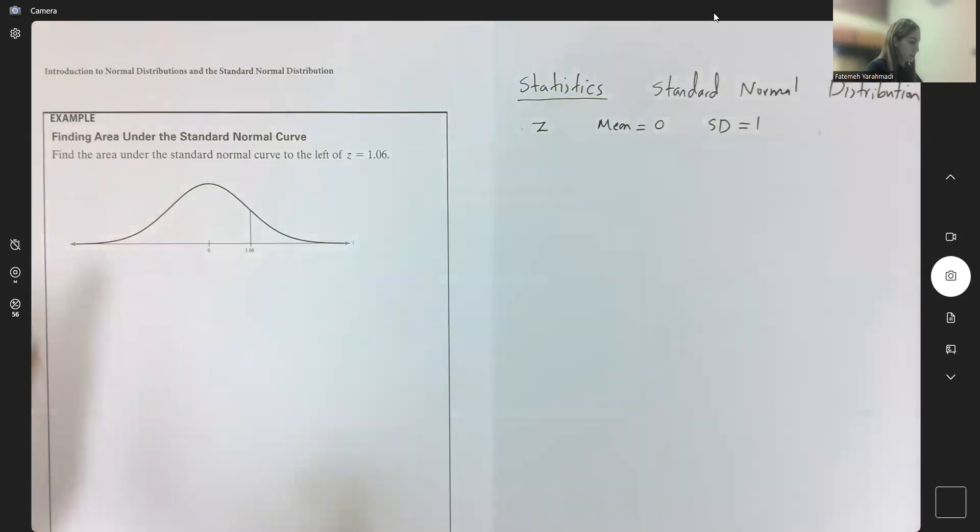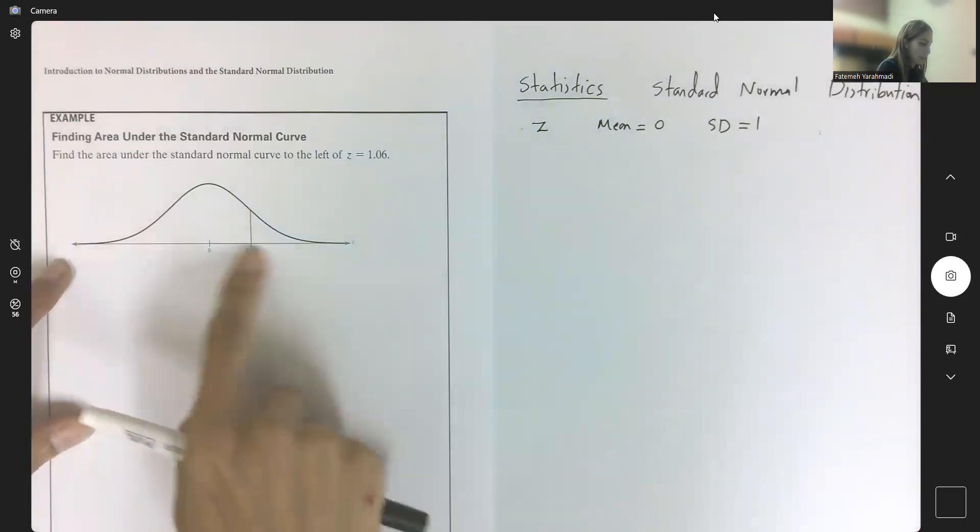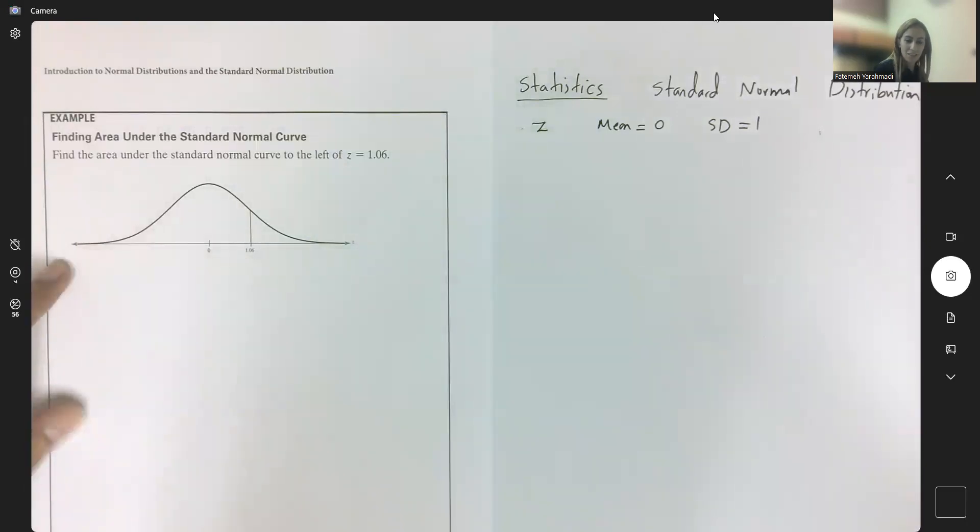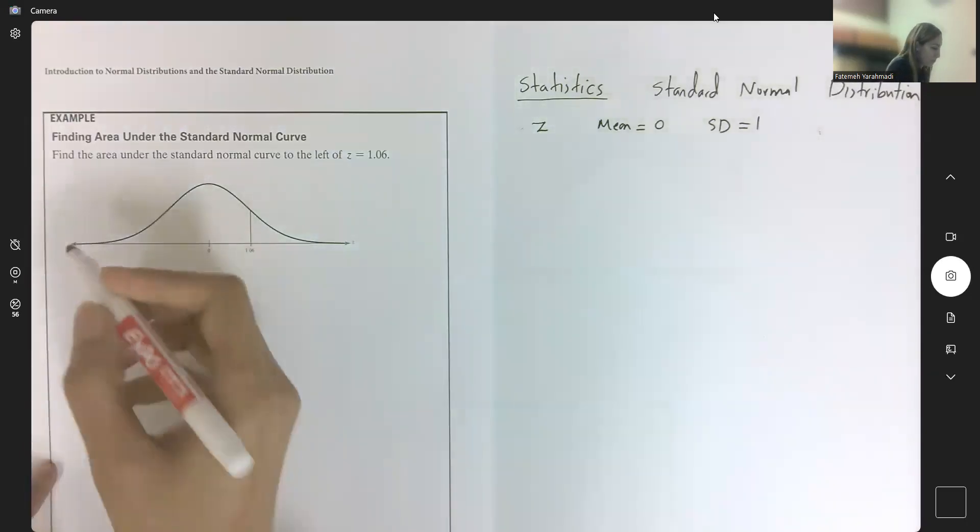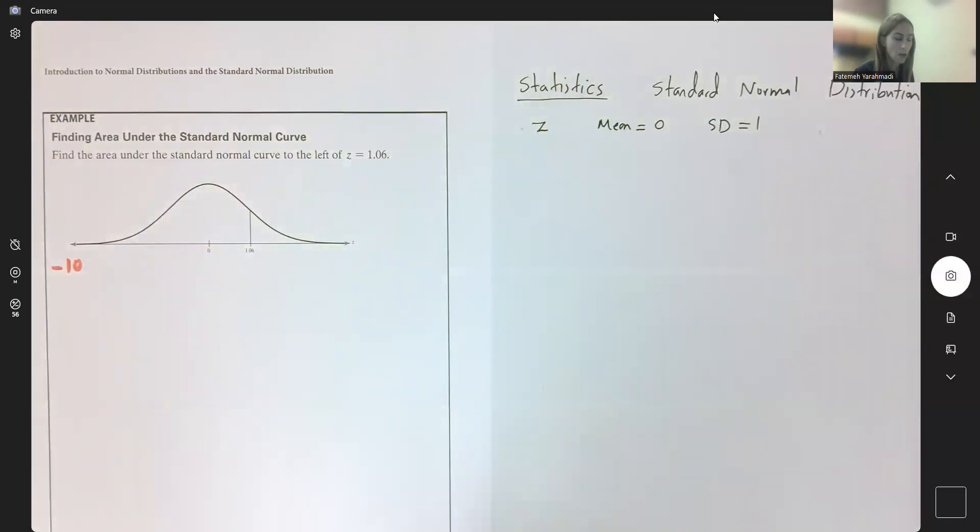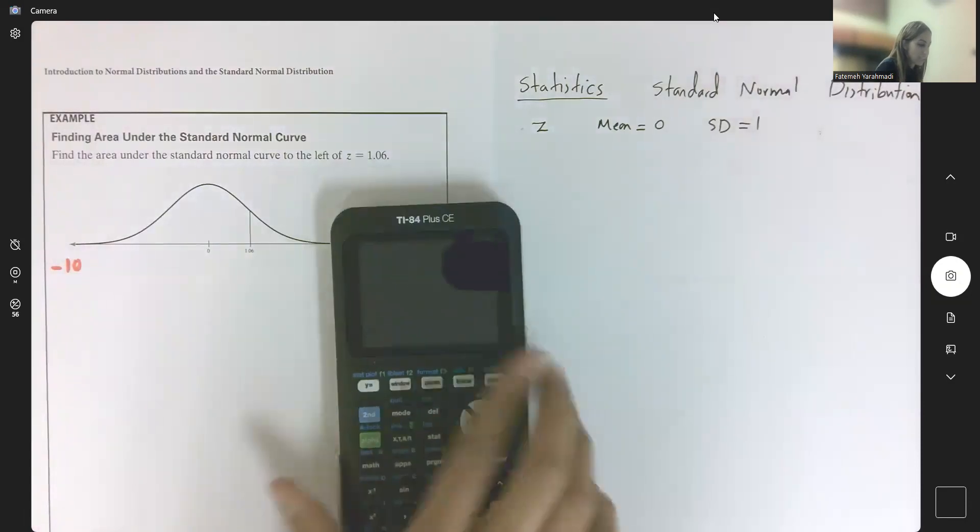On the left-hand side of 1.06, a very good lower bound is negative 10. All numbers on the left-hand side of zero are negative numbers, right? Let's take a look at our calculator when we are using our calculator to find the probability or area.